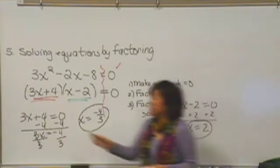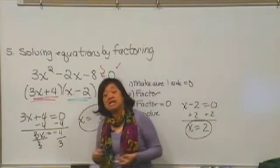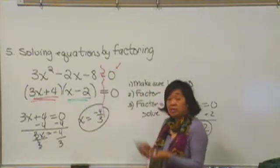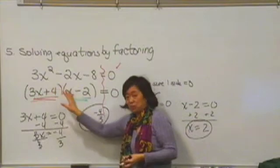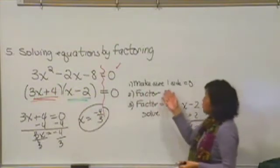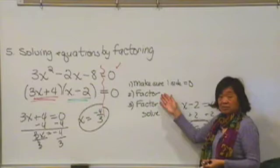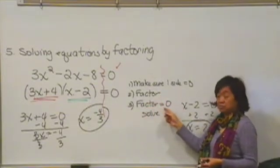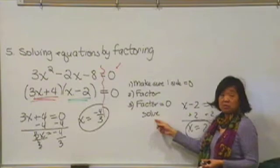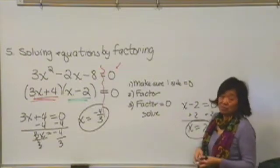Anytime we have a quadratic equation, it'll always have two answers. It may be one answer that's repeated twice, but there'll always be two factors, two answers. So again, you make sure one side's equal to zero, you factor, and then you set up two smaller equations where each factor equals zero. Solve each of those smaller equations, and you solve the original problem.